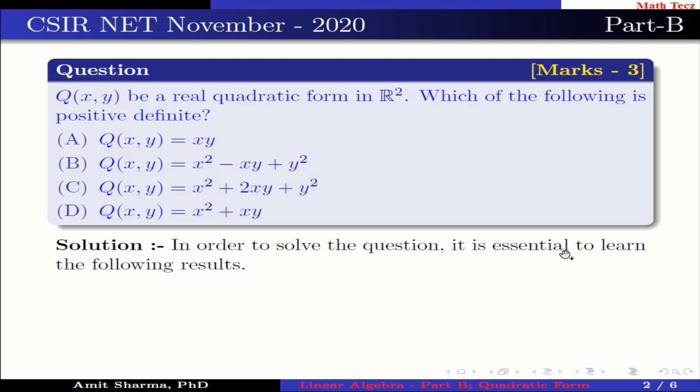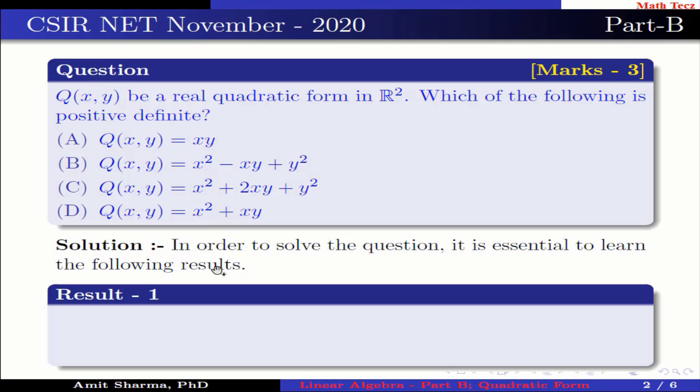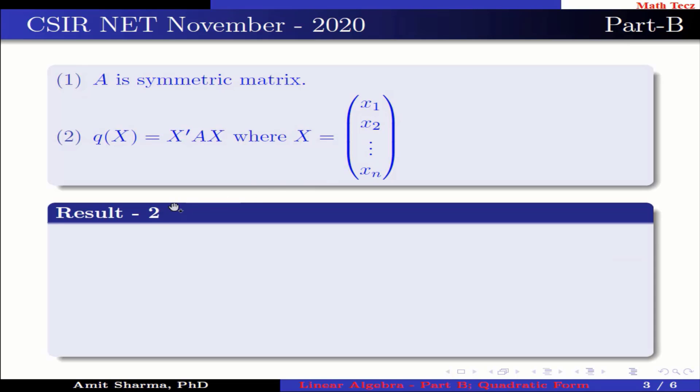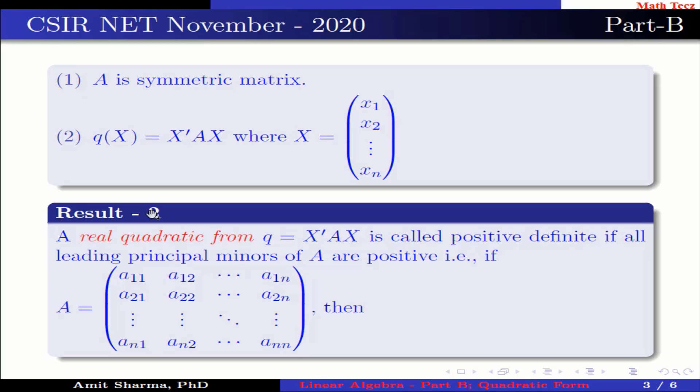In order to solve the question, it is essential to learn the following results. Result number one: Let Q be a quadratic form in variables x₁, x₂, up to xₙ over a field F. An n×n matrix A is said to be the matrix of Q if: number one, A is a symmetric matrix; number two, Q(x) = x'Ax, where x is a column vector having elements x₁, x₂, up to xₙ.